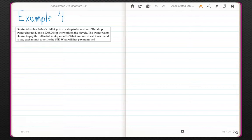Denise takes her father's old bicycle to a shop to be restored. The shop owner charges Denise $205.20 for the work on the bicycle. The owner wants Denise to pay the bill in full in four and a half months. What amount does Denise need to pay each month to settle the bill? We have $205.20. This is a debt, so this money is negative. It's an amount that Denise owes. And a debt is always negative. Money that you have to pay is always negative. That is going to be paid in four and a half months. For ease of writing, I'm going to drop the dollar sign for right now knowing that I have to bring that dollar sign back in my answer.